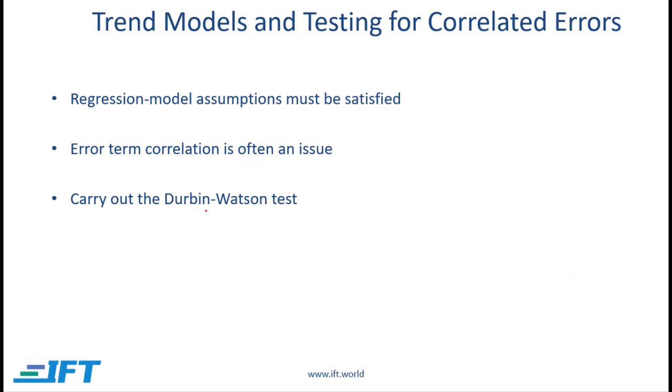The more formal method for testing for correlated errors or testing for serial correlation is to use the Durbin-Watson test. We talked about the Durbin-Watson test in the previous reading and that's exactly what we are using over here. If you look at examples 1, 2 and 3 along with other regression statistics, the DW stat is also being reported and you will notice that the DW stat is relatively low. So how do we interpret that?